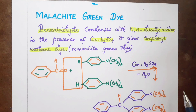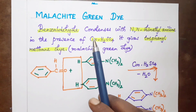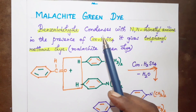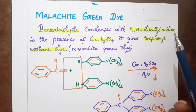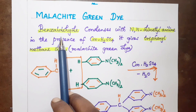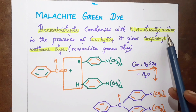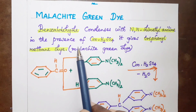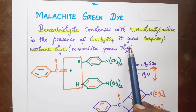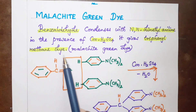Hello, good morning. Welcome to Chemistry School of Learning YouTube channel. In this class, we cover malachite green dye — its preparation and properties. Benzaldehyde condenses with NN-dimethylaniline in the presence of concentrated sulfuric acid, giving a triphenylmethane dye.